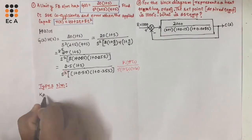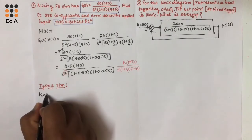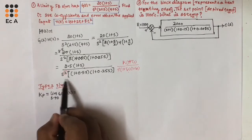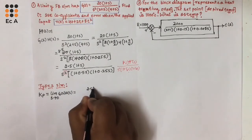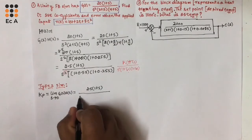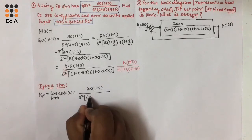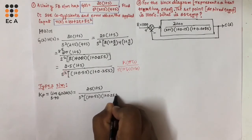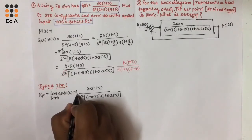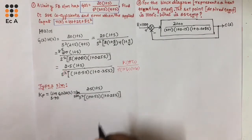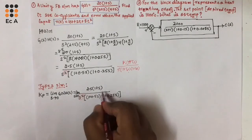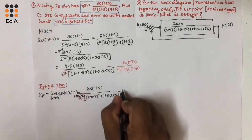We can write Kp, the positional error coefficient, as the limit of S tends to 0 of G(S) times H(S). Substituting the equation: 2.5 times (1 plus S) divided by S squared times (1 plus 0.5S) times (1 plus 0.25S). Applying the limit S tends to 0, the denominator term becomes 0, so the reciprocal of 0 gives Kp equal to infinity.